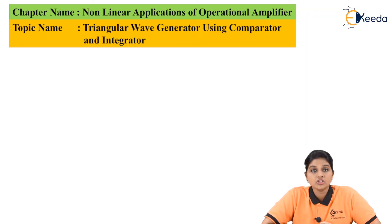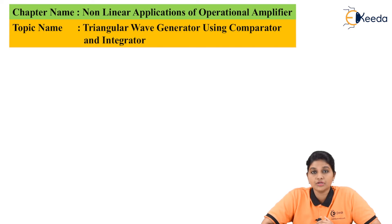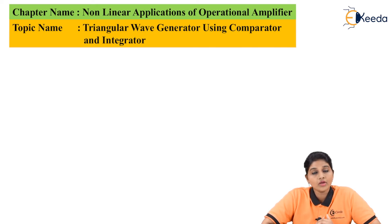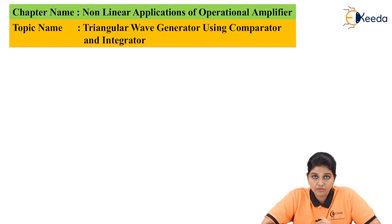Operational amplifier is basically used to produce many applications like addition, subtraction, multiplication, and division. In addition to that, it is also used to produce various waveforms which include square wave, triangular wave, and sawtooth wave. Now in this circuit we are going to see how to produce a triangular waveform by using a comparator circuit and integrator circuit.